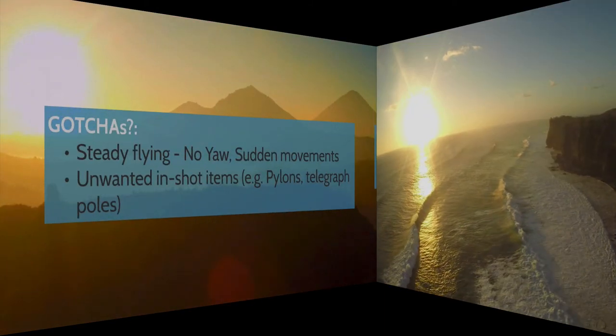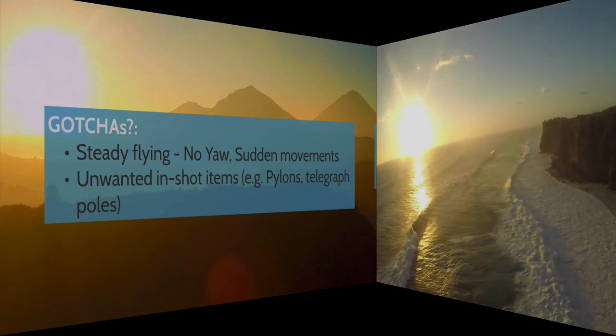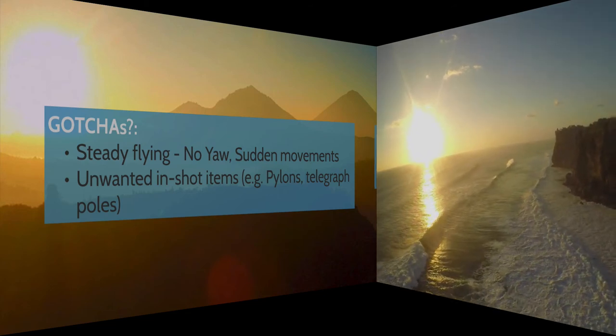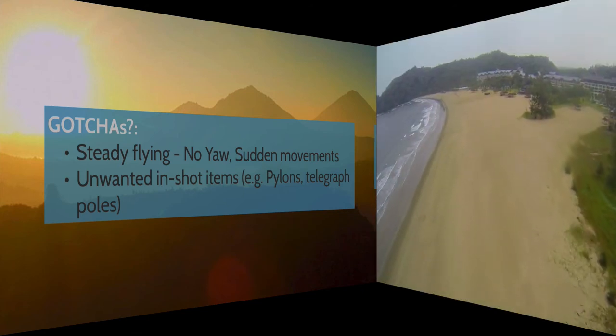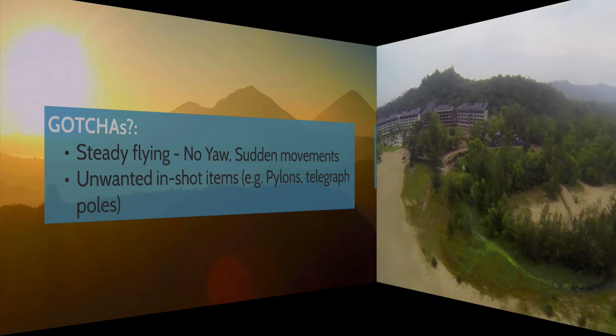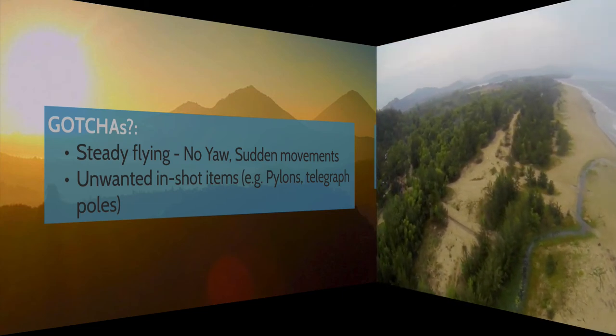Gotchas. What do you need to watch out for? What things are going to weaken the dramatic? Well, you want to make sure that you don't get any flight erratics in there, so steady flying. No yaw, no sudden movements. You also want to avoid getting any unwanted in-shot items. So man-made stuff typically weakens the beauty dramatic. Pylons, telegraph poles, those kinds of things.